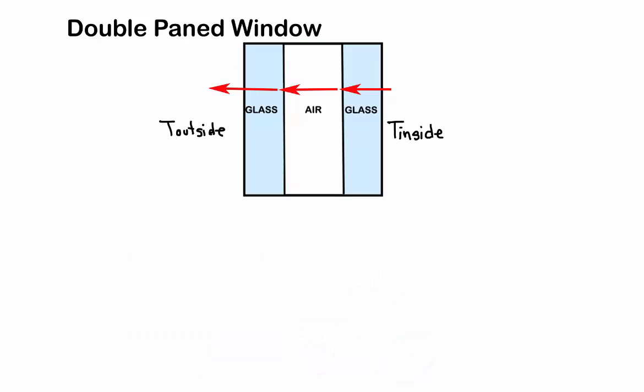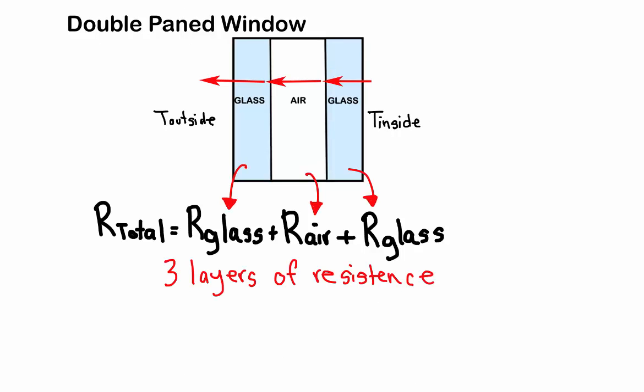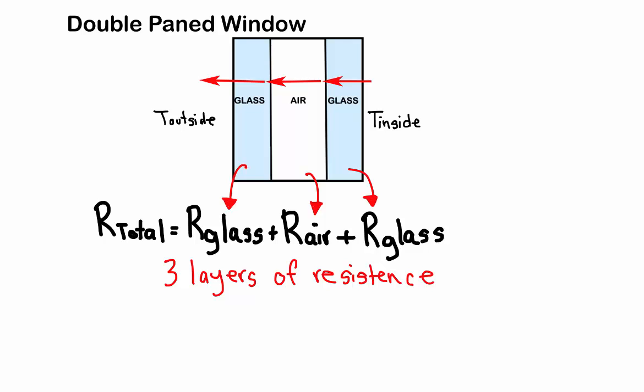Remember we said that R-total equals R-glass plus R-air plus R-glass. This is because we have three layers of resistance. When we solve the formula for resistance, this is what we get. We have two panes of glass of 3 mm thickness separated by an air gap of 2 mm thickness.